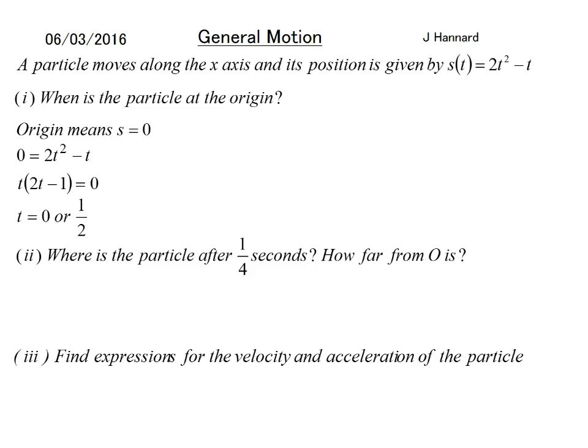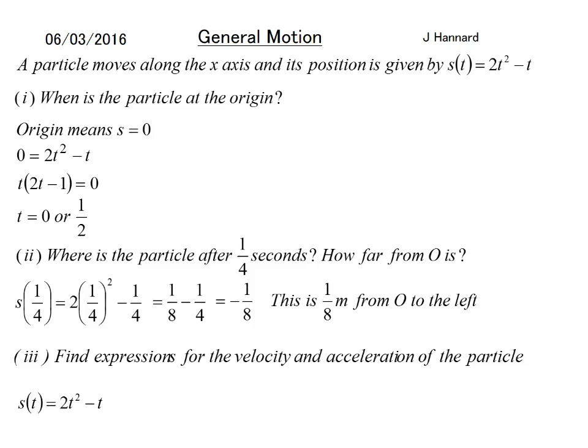Therefore, t must equal zero or a half. Where's the particle after a quarter of a second and how far from O is it? We'll put a quarter through and we'll get s(1/4) = 2 × (1/4)² - 1/4, which equals 1/8 - 1/4, which is -1/8. So from the origin, it's an eighth of a meter but obviously back or to the left if you want to think about it axes-wise.